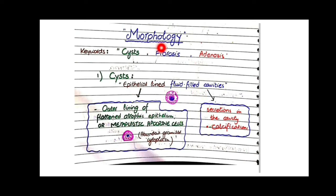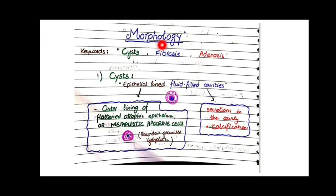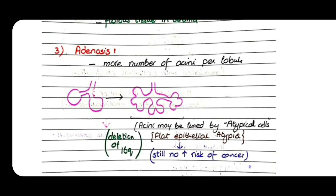The second morphological change in non-proliferative disease is fibrosis, which simply means fibrous tissue in the stroma appearing eosinophilic. The third keyword is adenosis — 'adeno' meaning glands and 'osis' meaning excess — so adenosis means more number of acini per lobule. In non-proliferative disease with adenosis, these acini increase in number.